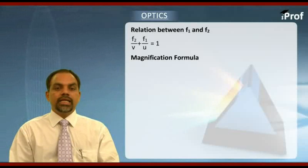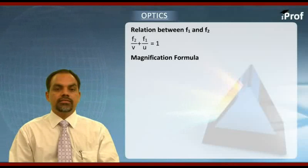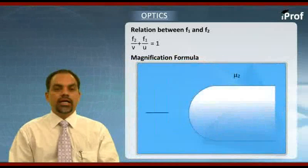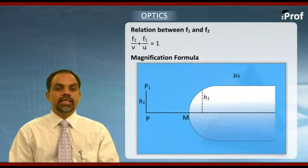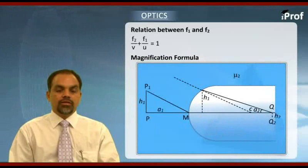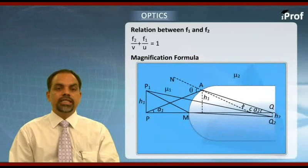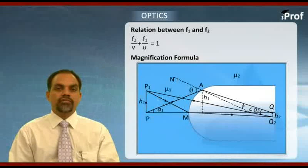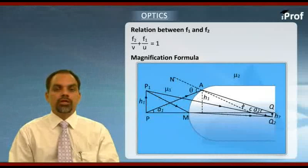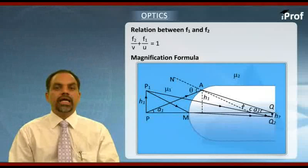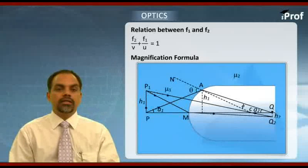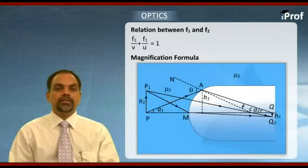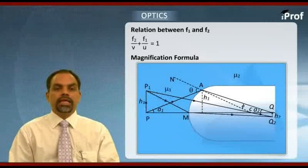We take an object as it is given in the figure and we would like to trace its image. To trace the image we need to consider any two refracting rays. To find the image of bottom of the point object, here our object is an arrow. The tip of the arrow is denoted by p1 and the bottom of the arrow is denoted by p and its height is h1.